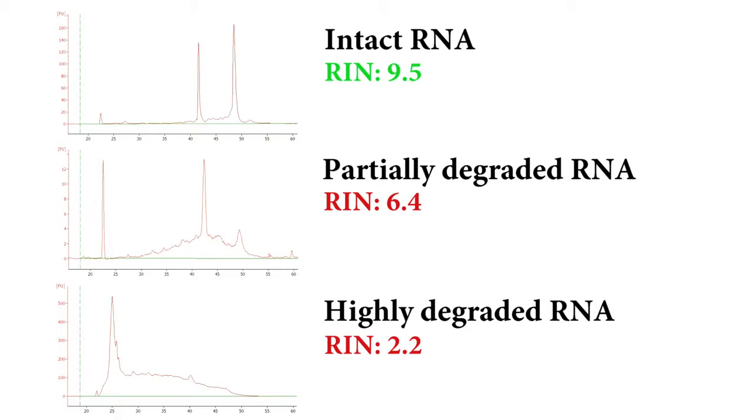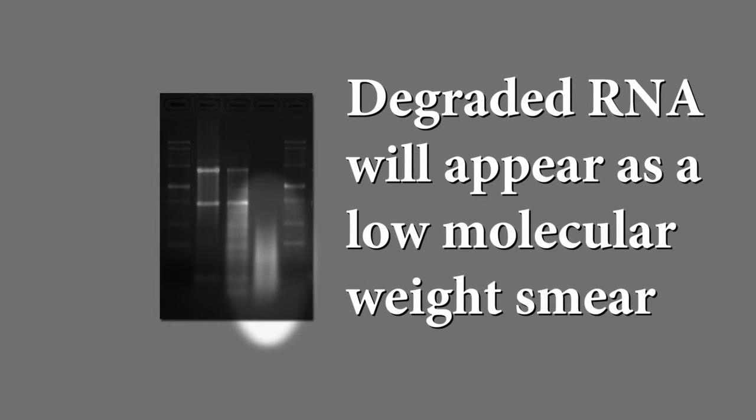Partially degraded RNA will have a smeared appearance, will lack the sharp rRNA bands, or will not exceed the 2 to 1 ratio of high-quality RNA. Completely degraded RNA will appear as a very low molecular weight smear.